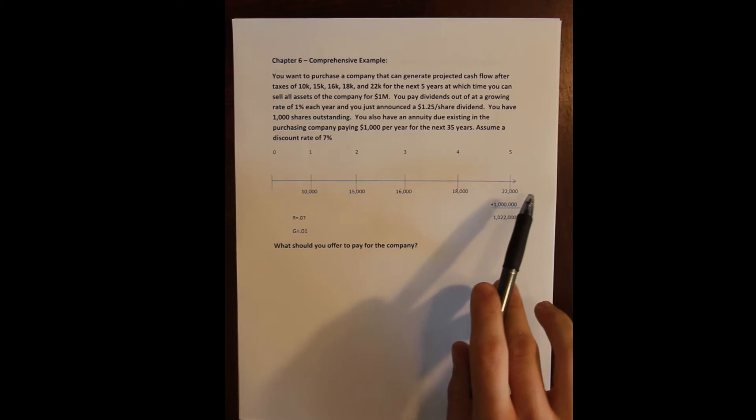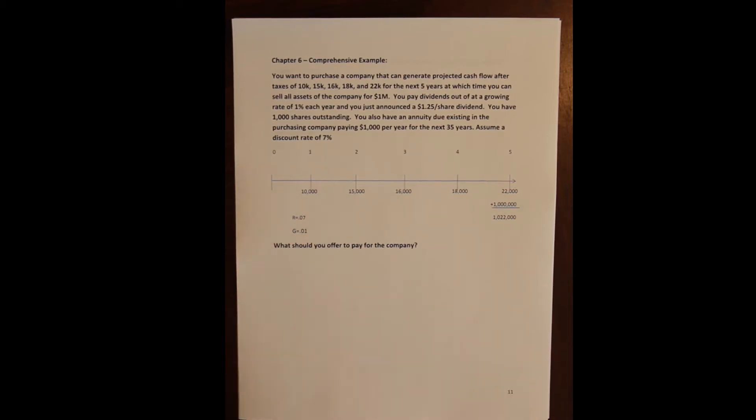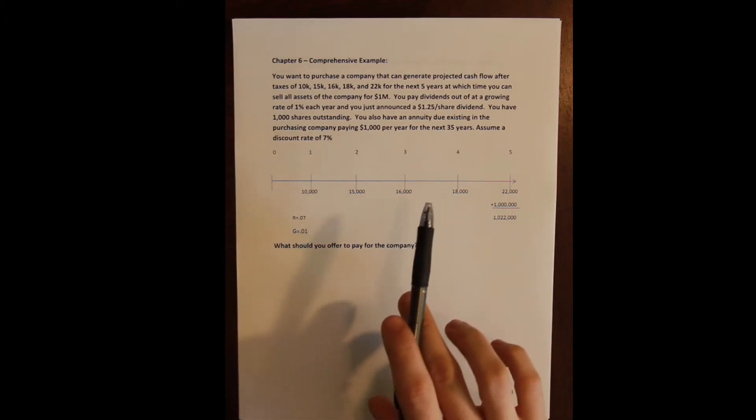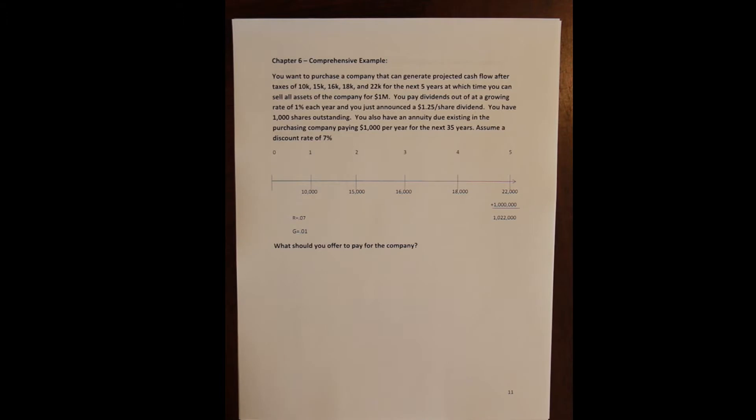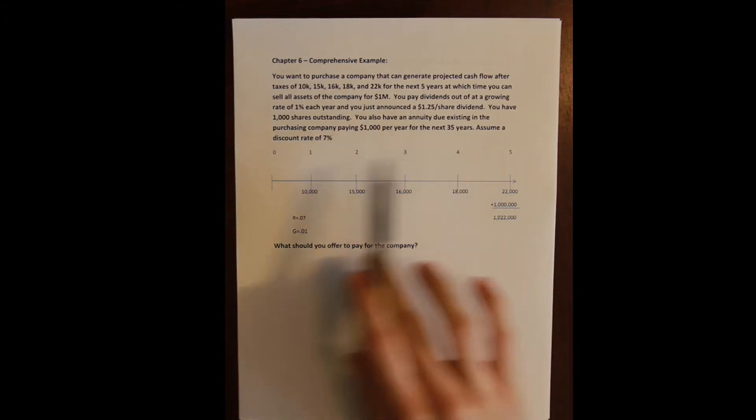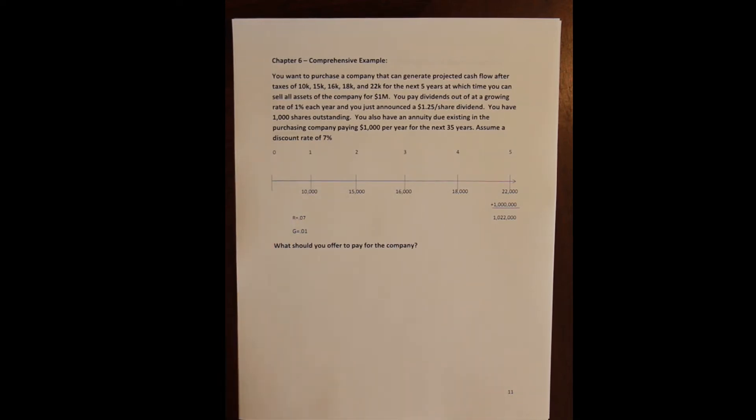Again, so this is the cash flow that the company itself is gonna generate. And then at the end of the five-year period, I can sell all of the company's assets for a million dollars. So they've got machinery, they've got equipment, they've got a warehouse, they've got some trucks and computers. I'm gonna sell all of that and just close the company down. And the company that we run, we have shares outstanding, so we owe our shareholders dividends and we pay it out at a growing rate of 1% each year. And we just announced $1.25 per share dividend. And we have a thousand shares outstanding. Finally, we have an annuity due existing in the purchasing company that pays us a thousand dollars per year for the next 35 years. So you can think about this like maybe we rent out some office space. We rent it out really cheaply for a thousand dollars per year.